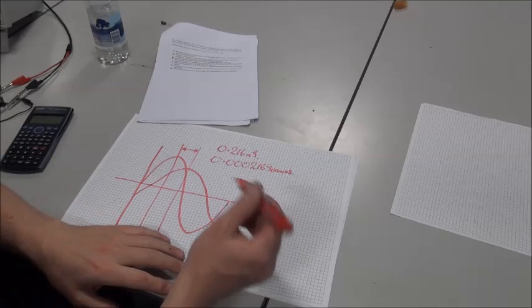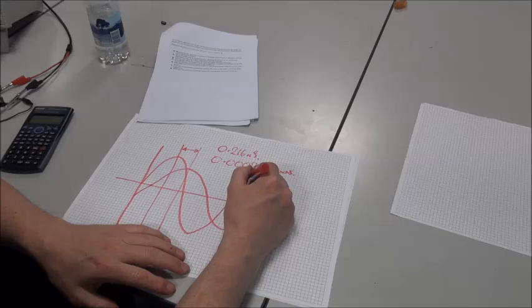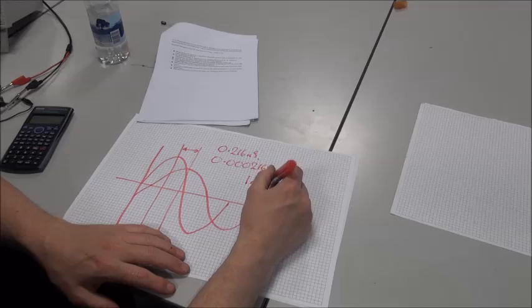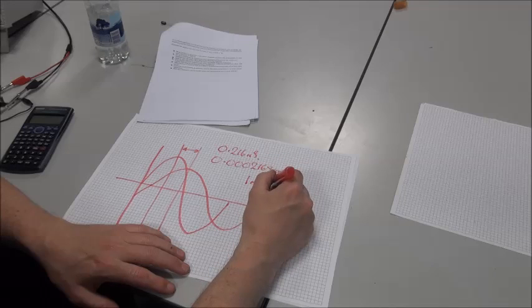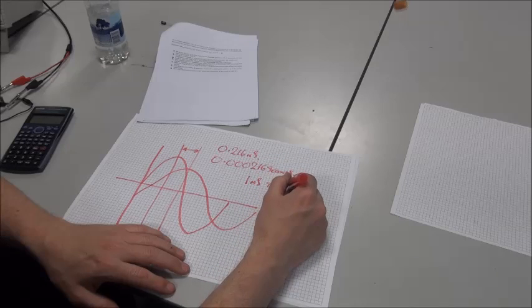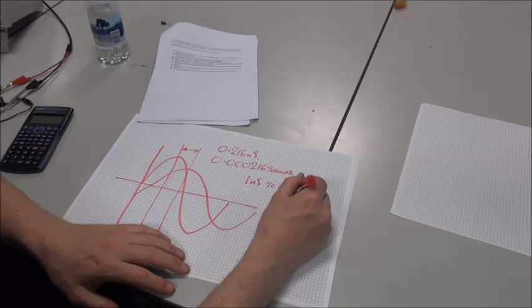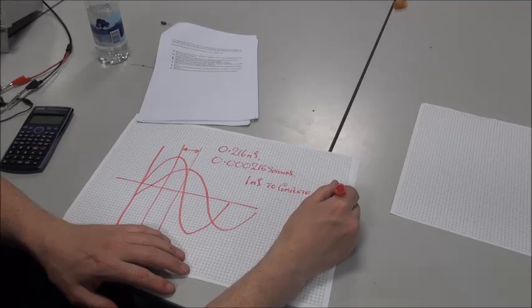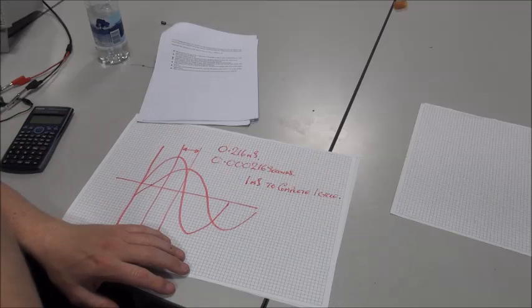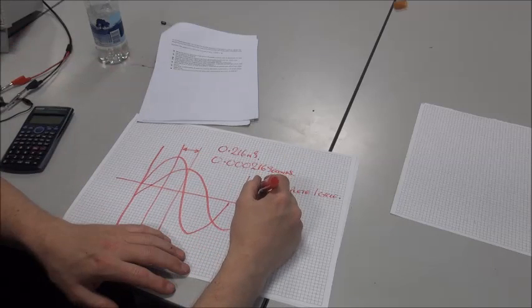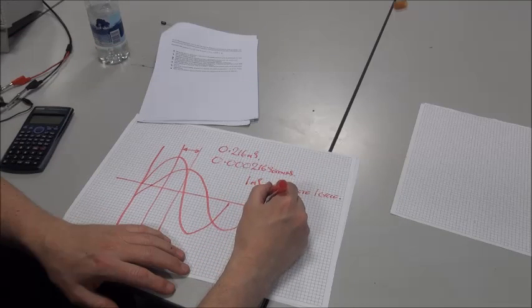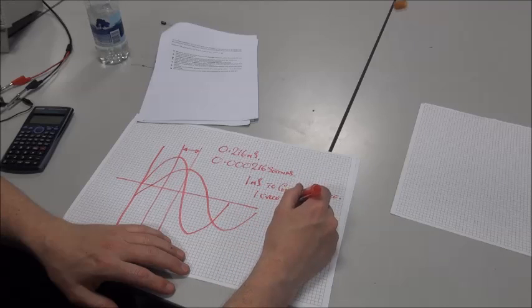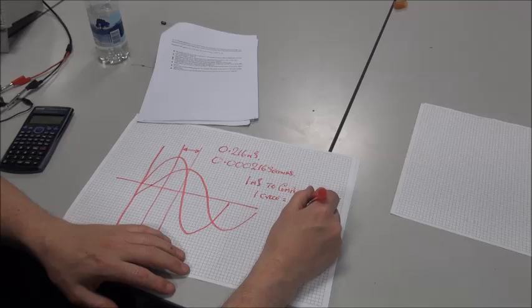So that means the sine wave takes 1 millisecond to complete one cycle. And we know, or we note, that one cycle is equal to 360 degrees.